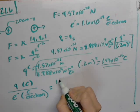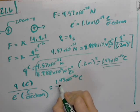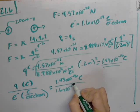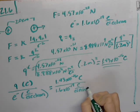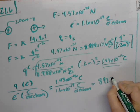So we're going to do 1.43 times 10 to the negative 16th divided by 1.6 times 10 to the negative 19th, and you're going to get something in the neighborhood of 891.33.